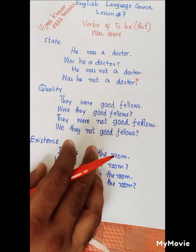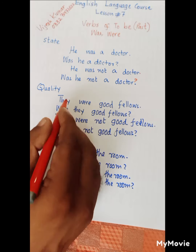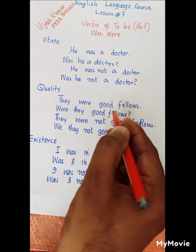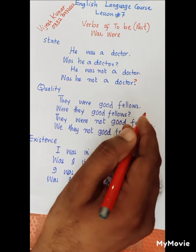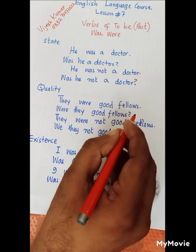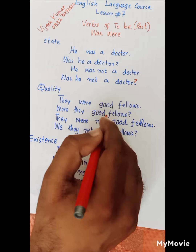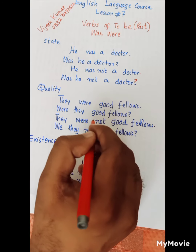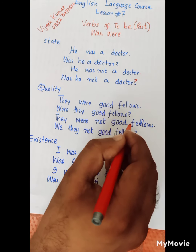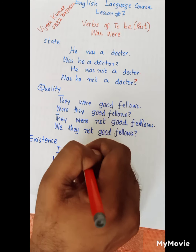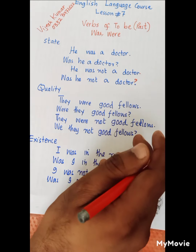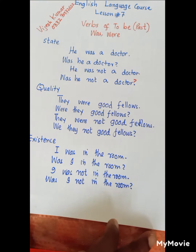For quality, the example will be 'They were good fellows.' The interrogative form is 'Were they good fellows?' The negative is 'They were not good fellows.' And the interrogative negative is 'Were they not good fellows?' This is a quality example.